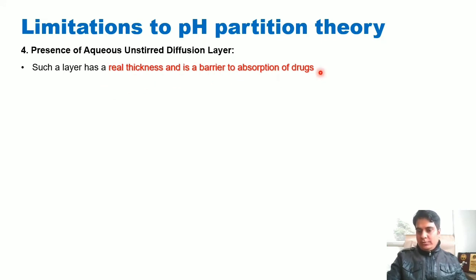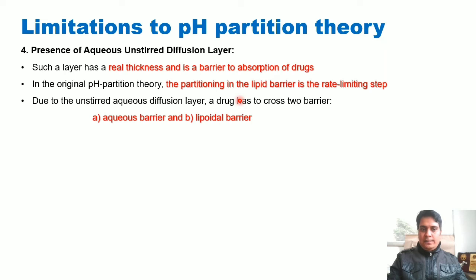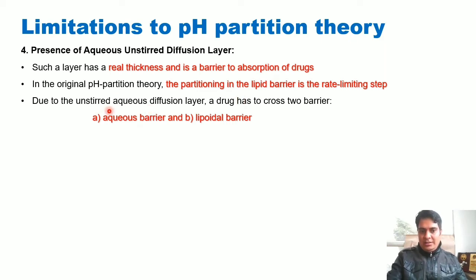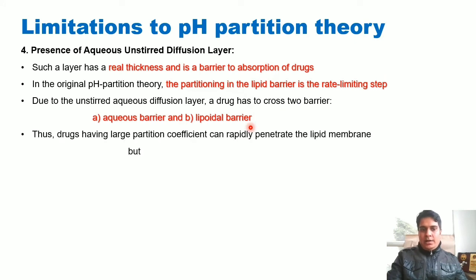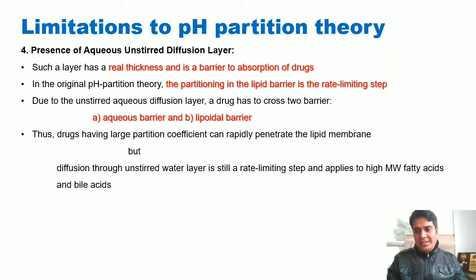The bulk of the luminal fluid is not in direct contact with the membrane; instead a barrier called the aqueous unstirred diffusion layer is interposed between them. Such a layer has a real thickness and is a barrier to drug absorption. In the original pH partition theory, the lipoidal barrier is the only rate-limiting step, but now we see there is one more rate-limiting layer. Drugs having a large partition coefficient can rapidly penetrate the lipid membrane, but diffusion through the unstirred water layer is still a rate-limiting step, especially for high molecular weight fatty acids and bile acids.